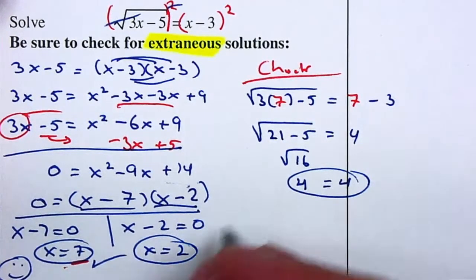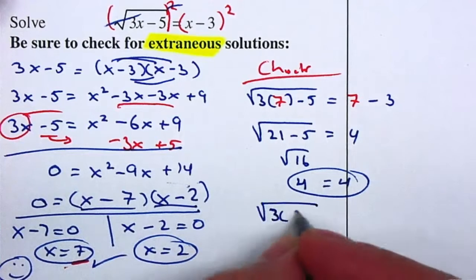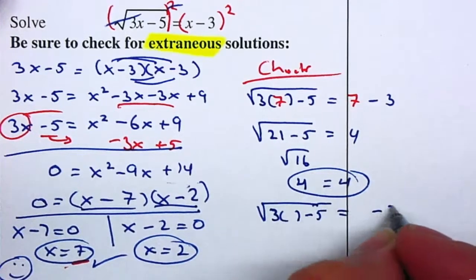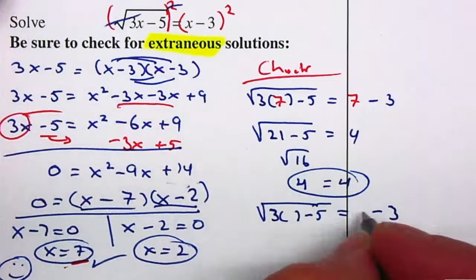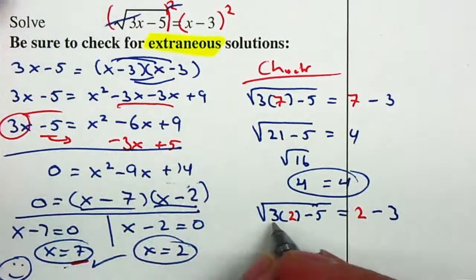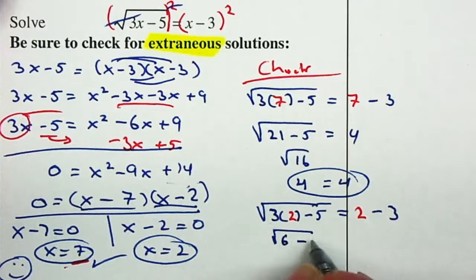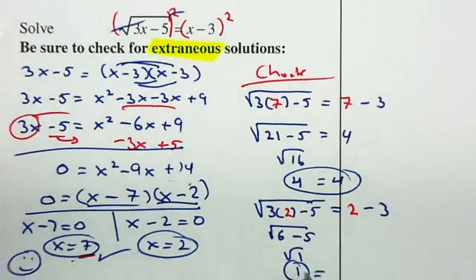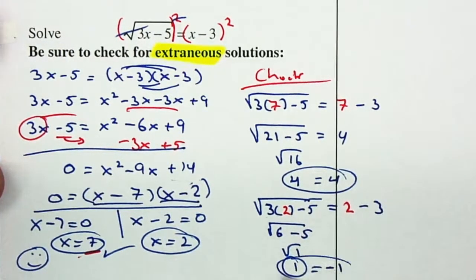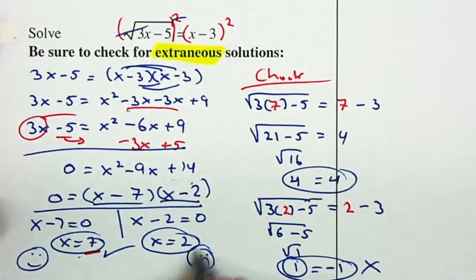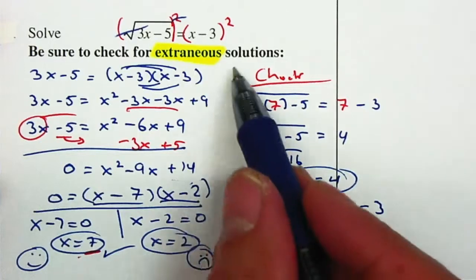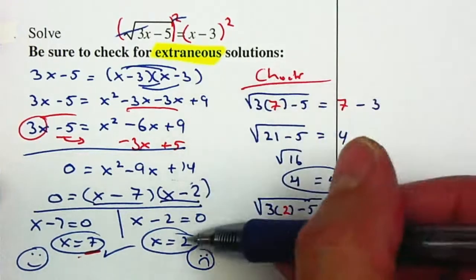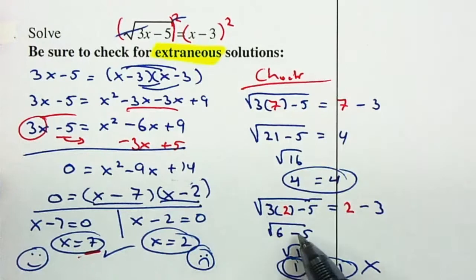Now let's go ahead and check 2. The square root of 3x minus 5 is equal to x minus 3. By replacing x with 2, that gives me 6 minus 5, the square root of 1, which is 1. And on the right hand side, I end up with 2 minus 3 is negative 1. And that is incorrect. So therefore, my only answer is x equal to 7. x equal to 2 is what we call extraneous solutions. We did everything correct, but this does not work on this equation. So the only answer is x equal to 7.